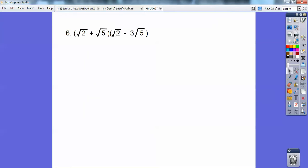One more. We're going to FOIL these two guys out. √2 + √5 times √2 - 3√5. Remember FOIL is first times first. So here's first times first right here. Here's outer times outer right here. Here's inner times inner right here. And then finally, last times last. That's right here.